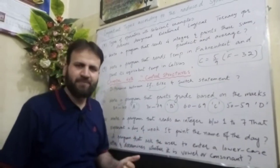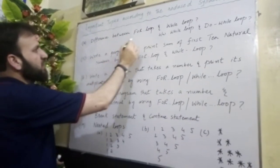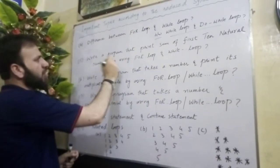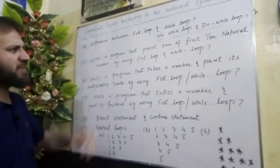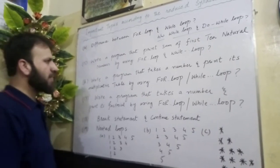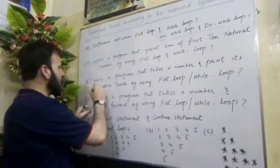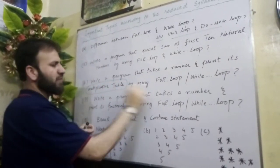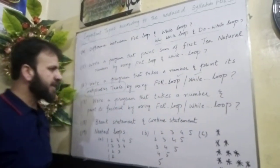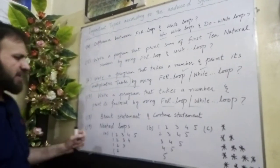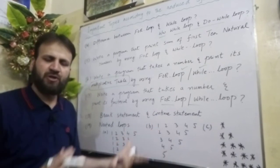Question fourteen: the difference between for loop and while loop. Similarly, the difference between while loop and do-while loop — these loop differences are important short questions. Question fifteen: write a program that prints the sum of the first N natural numbers using both for loop and while loop. Question sixteen: write a program that takes a number and prints its multiplication table using for loop and while loop. Question seventeen: write a program that takes a number and prints its factorial using for loop and while loop. Question eighteen: the difference between break statement and continue statement, with relevant examples.